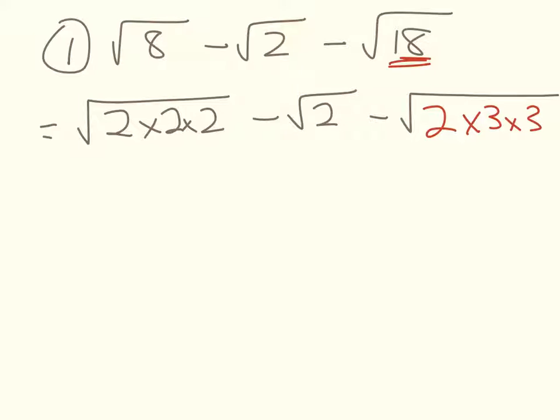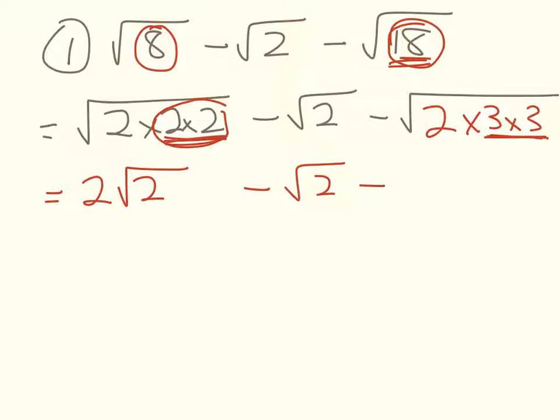So what I'm doing is, as we did in the last video, I'm hunting for square numbers that are factors of these. I've written this out like this, but many of you will already be able to skip that step. So the square root of 2 squared is 2, so here we're going to have 2 root 2, minus root 2, minus 3 root 2.